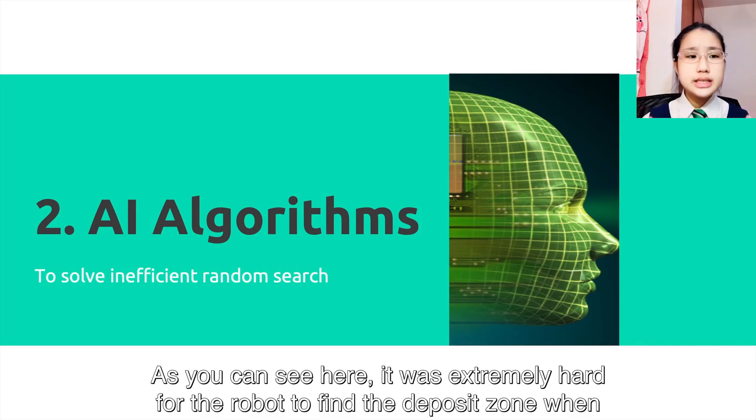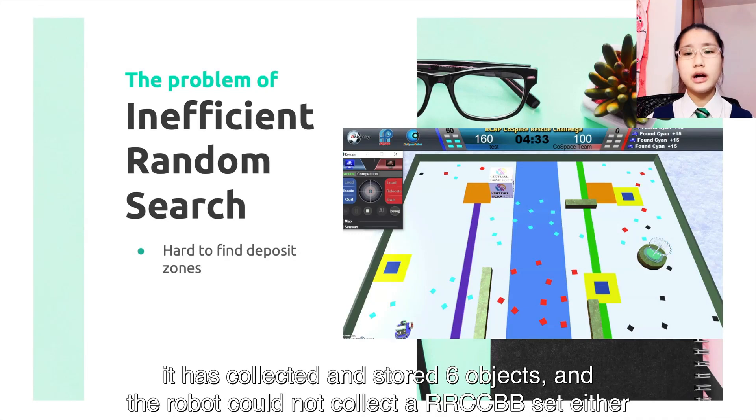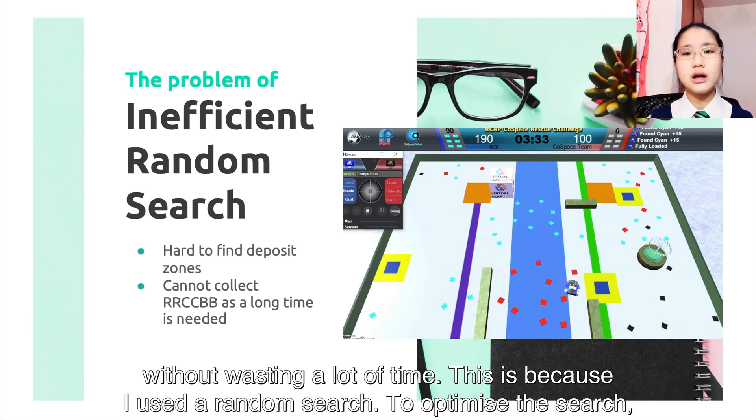As you can see here, it is extremely hard for the robot to find the deposit zone when it has collected six objects, and the robot could not collect an RRCCBB set either without wasting a lot of time. This is because I used a random search.